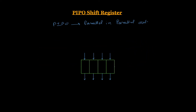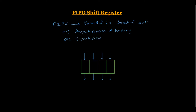Simultaneously, all 4 bits of the data will be transferred to the shift register. Now, how do we load the data? We have two different methods. One is known as the asynchronous loading method, where without any clock pulses we can transfer our data to the shift register. Another method is known as the synchronous loading method.